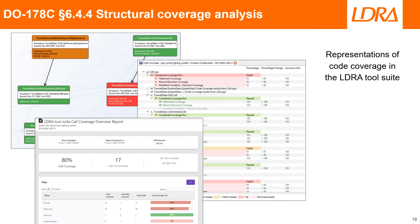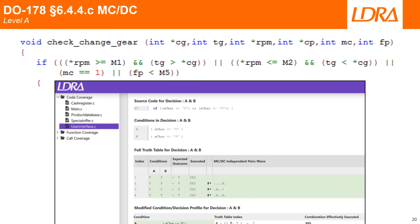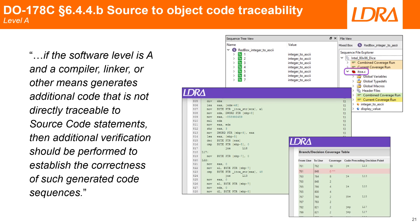DO-178C details metrics such as statement and decision coverage that are applied in accordance with the criticality of the software and hence the DAL and software levels. The fact that MCDC coverage is obligatory for level A software is one example of how criticality impacts V&V overhead. MCDC requires that each condition in a decision has been shown to independently affect that decision's outcome. This is an example of code with multiple conditions and decisions along with a report showing its analysis. For the most critical systems, source-to-object code traceability must also be demonstrated, as it cannot be assumed that the compiler is interpreting the developer's intent accurately.